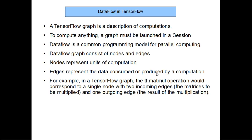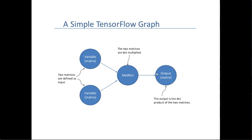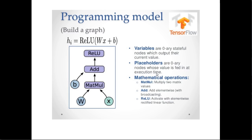Say you have two matrices and you want to multiply them. The two matrices will be the edges, and the matrix multiplication operation will be the node. Looking at a simple TensorFlow graph: the two matrices are the edges, matrix multiplication is the node, and the output will again be an edge.